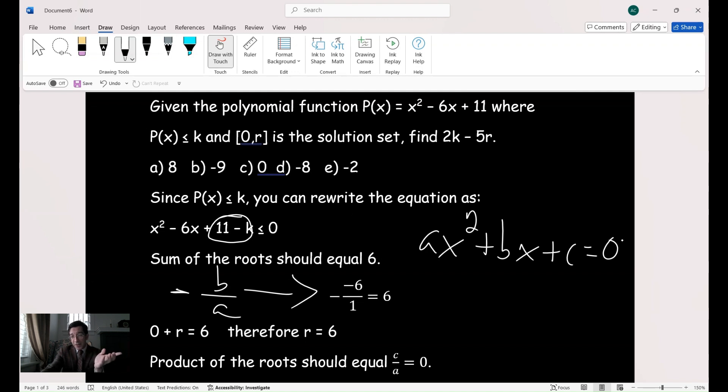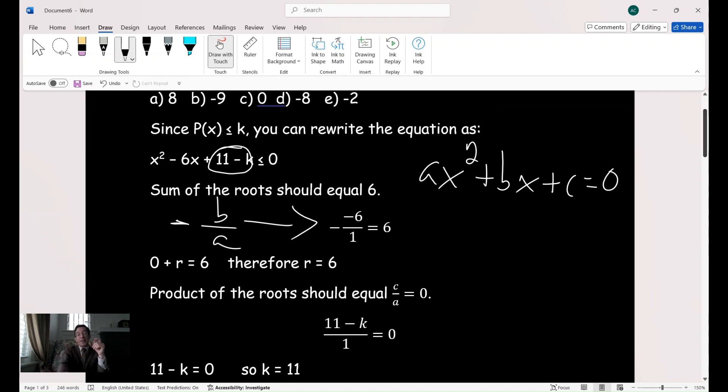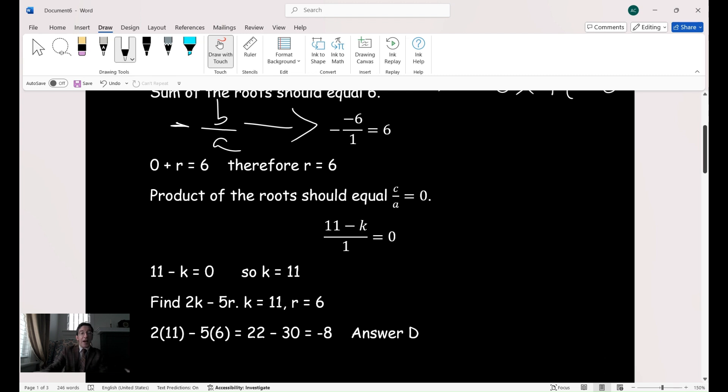We're almost done by now. So now the product of the roots is going to have to equal zero. Why? Because zero times r is zero. And so if we set it equal to the constant, the constant is (11 - k)/a, a is 1, equals zero. That means that k has to be equal to 11. And therefore we're now done. The question is asking you to find 2k - 5r. k is equal to 11, r is equal to 6. 2 times 11 is 22, 5 times 6 is 30, 22 - 30 equals -8. So congratulations to those of you who got it correct. If you did not get it correct, there were some of you who did not get this correct, now you see why you have to study the theory behind all these theorems in quadratic equations.